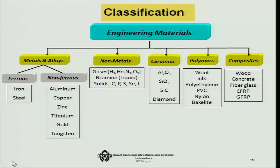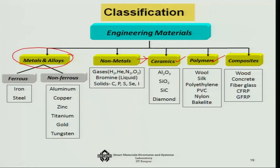We have done a summary of how materials have evolved. As of now, in today's scenario, if you want to take stock of what materials are in front of us, it is better to categorize them because there are many materials. If I think of categorizing the materials, then first I can keep metals and alloys separately — that is one group. Then I can keep the non-metals, and from the non-metals I can go for ceramics, then polymers, and then composites.